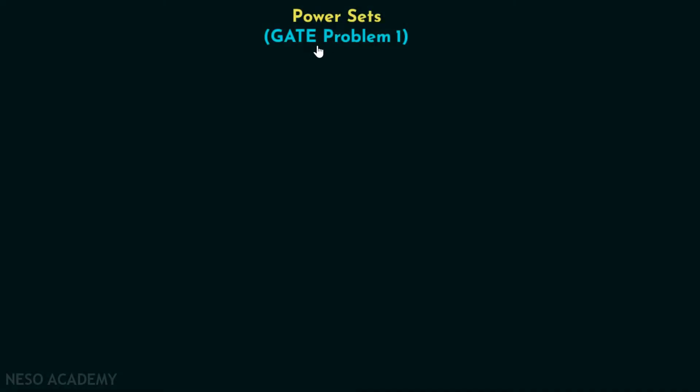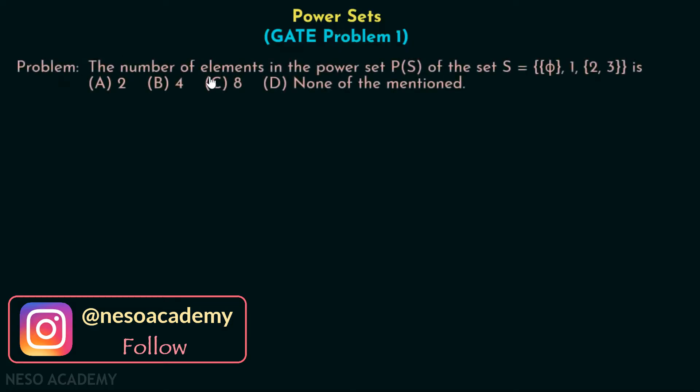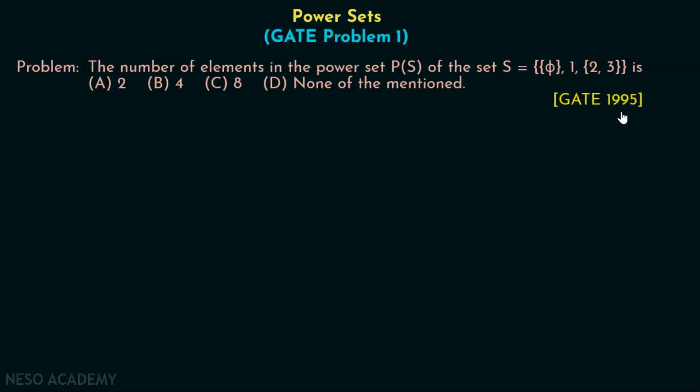In this presentation, we will try to solve one GATE problem related to power sets. Here is the problem: The number of elements in the power set P(S) of the set S = {{φ}, 1, {2, 3}} is (A) 2, (B) 4, (C) 8, or (D) None of the mentioned. This question has been asked in GATE 1995.